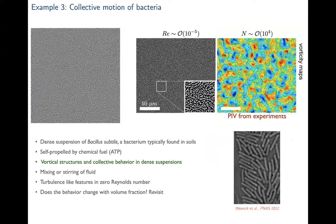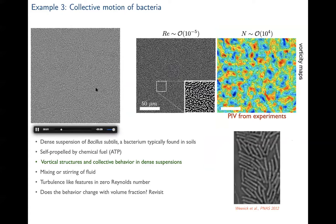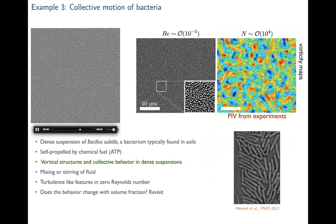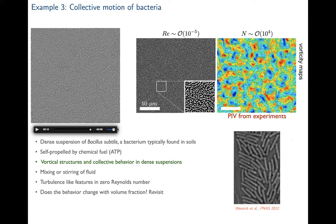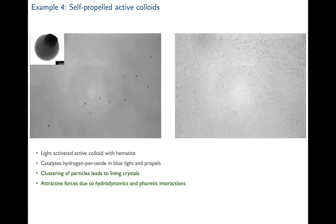Back to fluid mechanics at low Reynolds number: the bacterium Bacillus subtilis is a rod-shaped object five to ten micrometers long, moving around in viscous flows. When many such particles are present at high density, they form beautiful vortical structures — another example of emergent collective behavior. These vortical structures can mix the fluid very well, even at extremely low Reynolds number where nothing resembles turbulence, yet they have features reminiscent of turbulence.